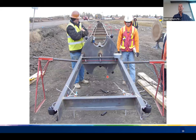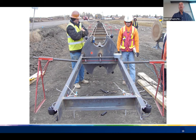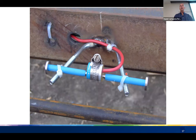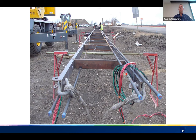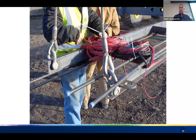Here is a view from the bottom looking up. The C-channels form a load frame used to pick up the O-cell assembly, lower it into the pile, and accurately position it. The frame also supports all the instrumentation. There were five sets of strain gauges installed in pairs on opposite sides. All the wires from the strain gauges and LVDTs are bundled up at the top of the load-carrying frame.